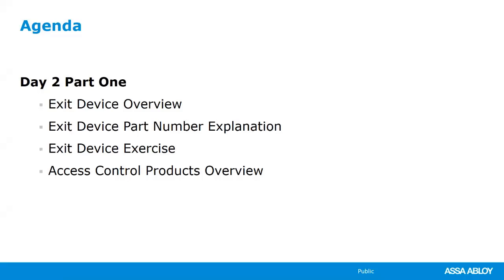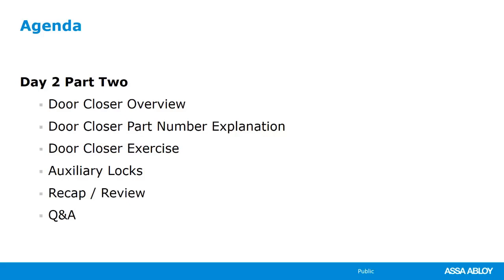The agenda for today: we'll go over an exit devices overview — why we use exit devices, applications, and industry requirements. We'll go through Sargent's product overview and explanation of part numbers and options. We will also do some pricing and part number exercises, then jump into access control products. During the exit device section, we will also talk about Sargent's multi-point locking devices and their applications. Part two will be door control: door closers, why they're used, Sargent's products, part numbers, a pricing exercise, and then Sargent's auxiliary locks and behavioral health products.